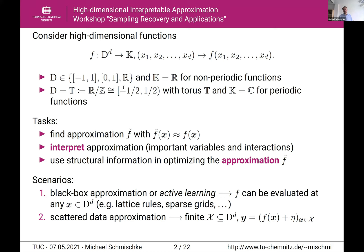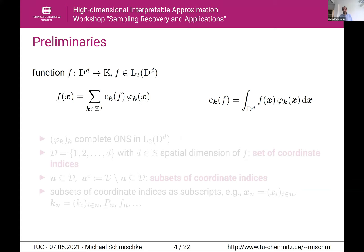A quick overview: in the first part I will introduce the classical analysis of variance, or ANOVA decomposition. In the second part I talk about group transformations and our approximation approach. In the third part I will show examples for synthetic and real data. Now, some necessary preliminaries: we have a function f over our domain which is square integrable. Everything works just the same with a weighted basis, but I left the weight out for simplicity.